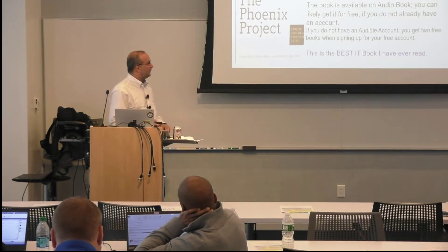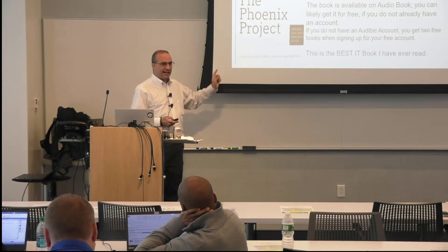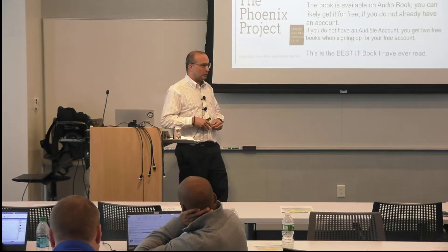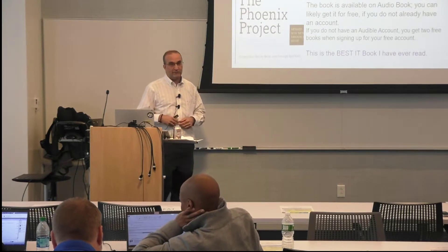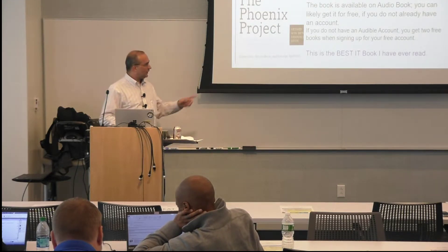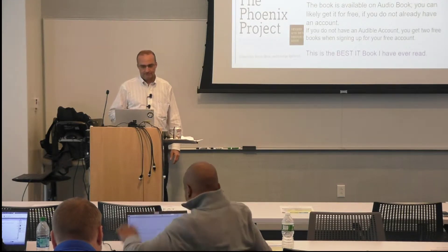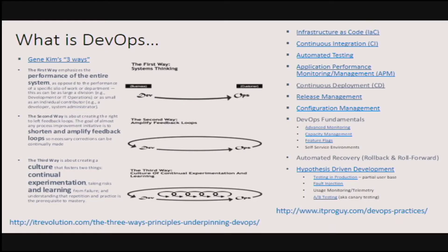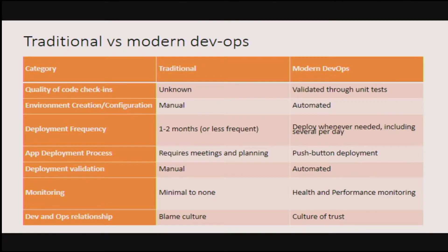A must-read book — and the slides are available on the GitHub repo — is The Phoenix Project by Gene Kim. If you want to be an architect, you have to read this book. If DevOps isn't in your world now, it should be very soon. He's written additional books as well, all very good.